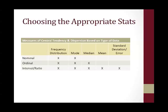I've created a table here to summarize the measures of central tendency and dispersion that are appropriate to report for each type of data. As you can see, for nominal data you can do a frequency distribution and a mode. For ordinal data, you can do both of those plus a median. For interval ratio data, you can do all of those plus the mean and the standard deviation.